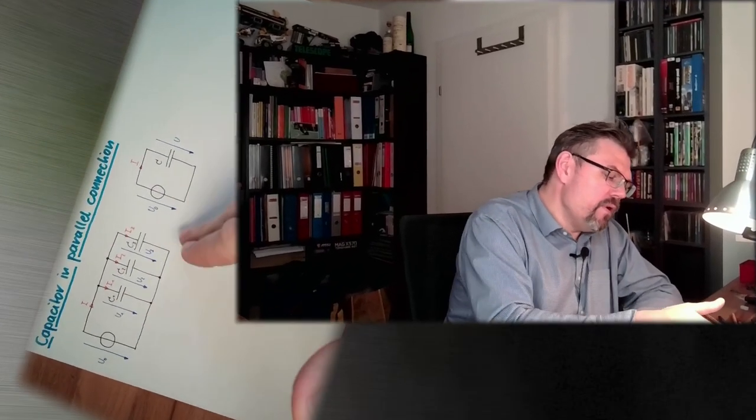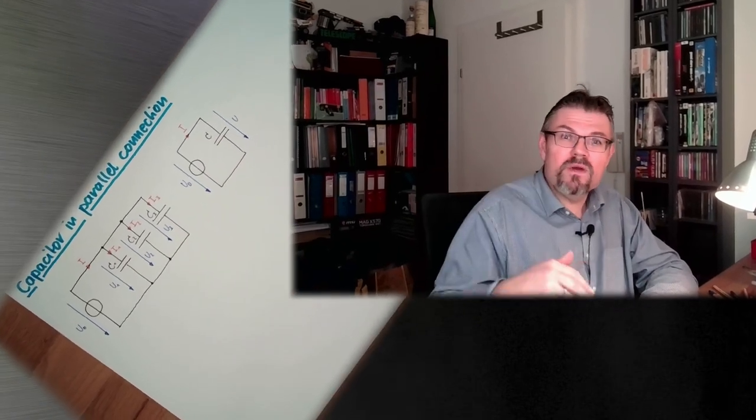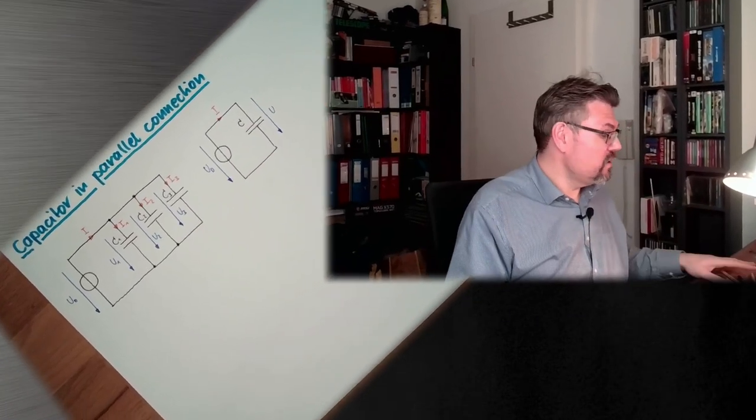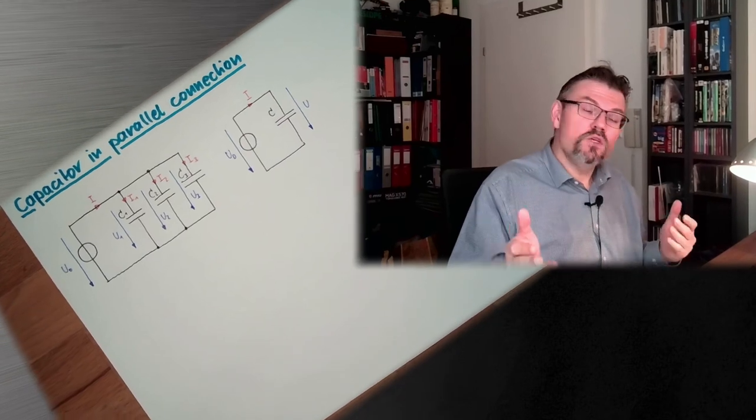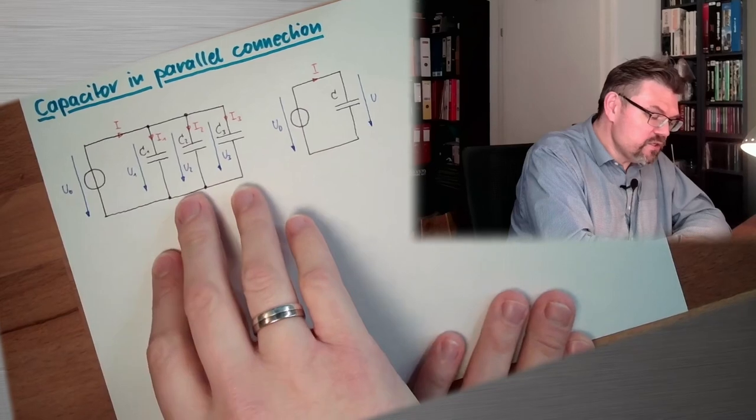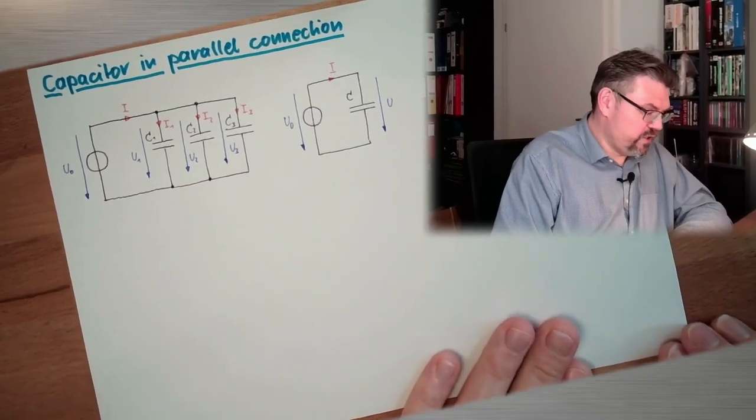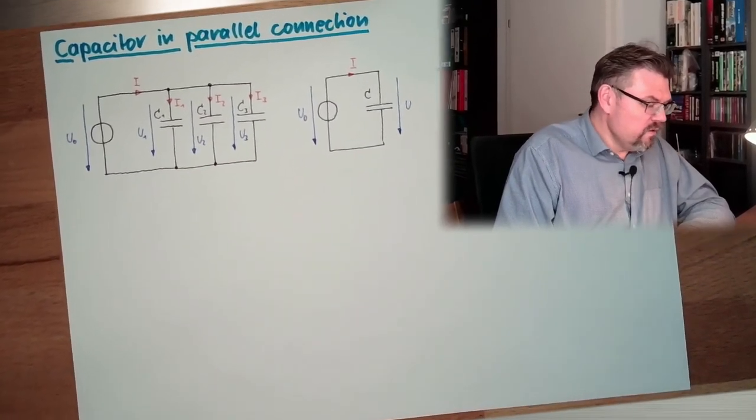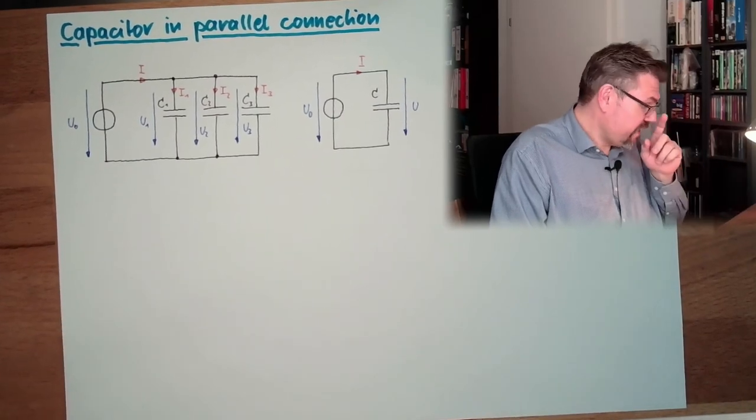So we are looking at three capacitors and we will again extrapolate, so extend our thoughts to more than three to n capacitors. And we want to replace this with one replacement imaginary replacement capacitor, which cannot be distinguished from outside. So this situation has to go to this situation. Let's have a look.